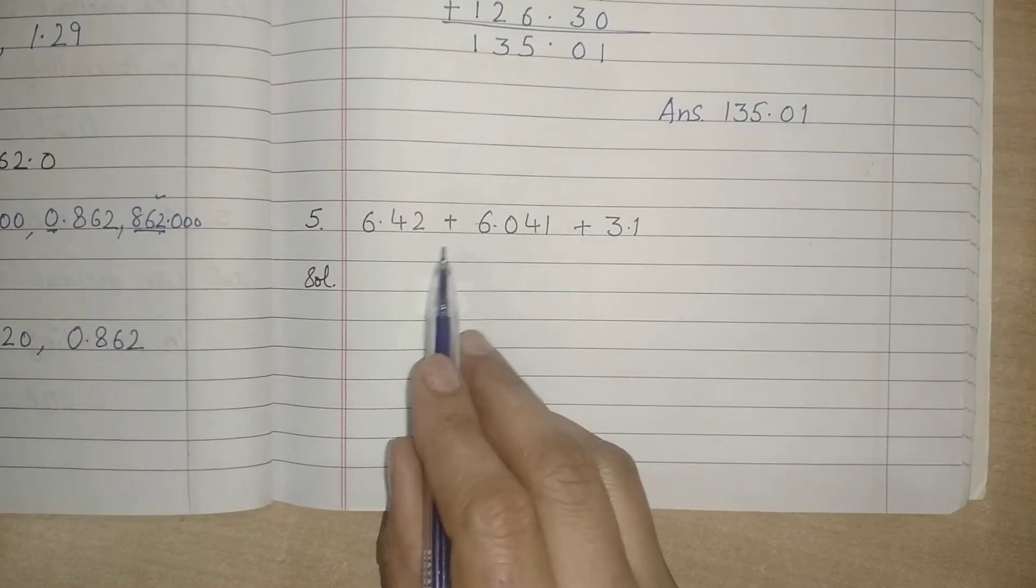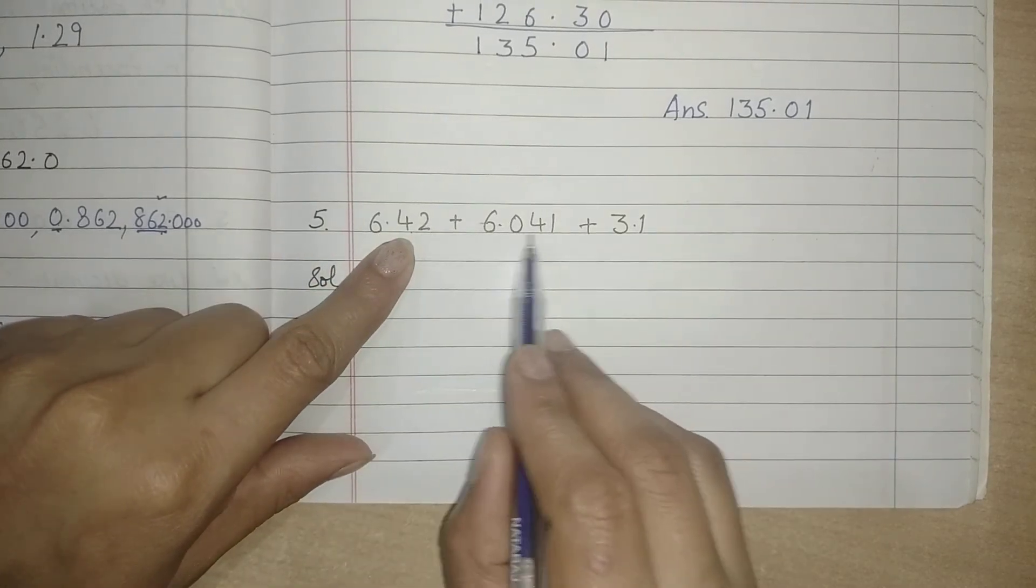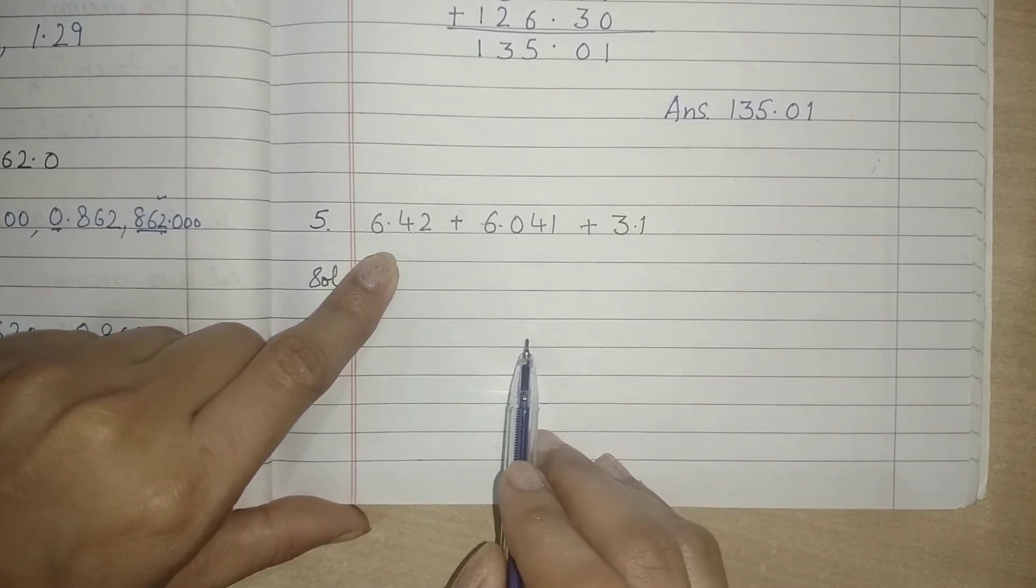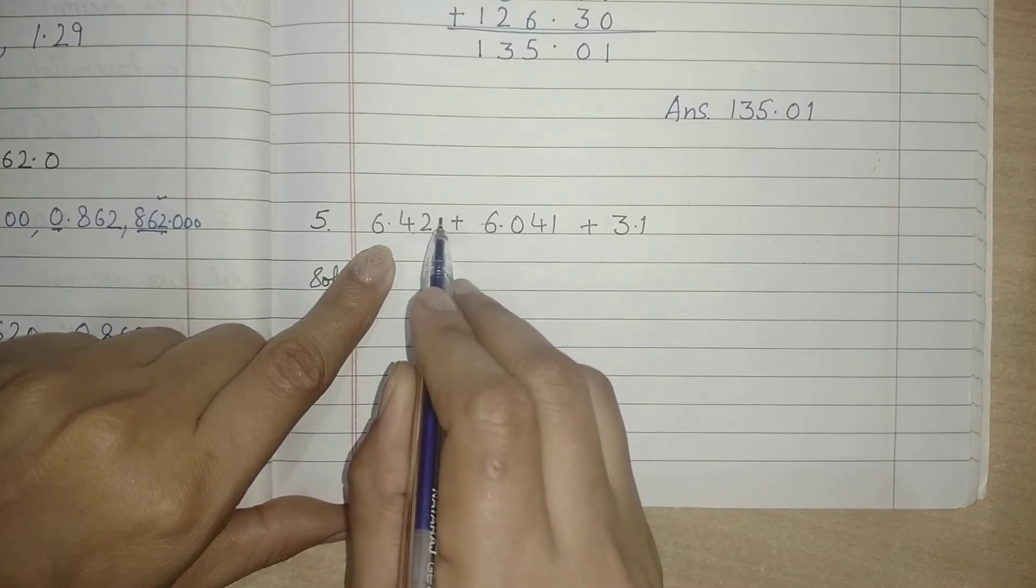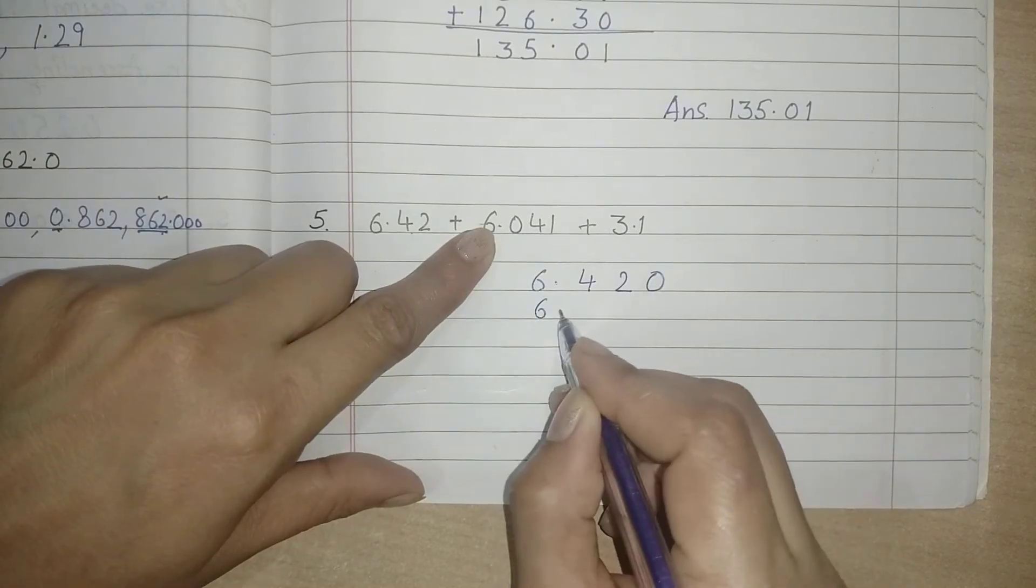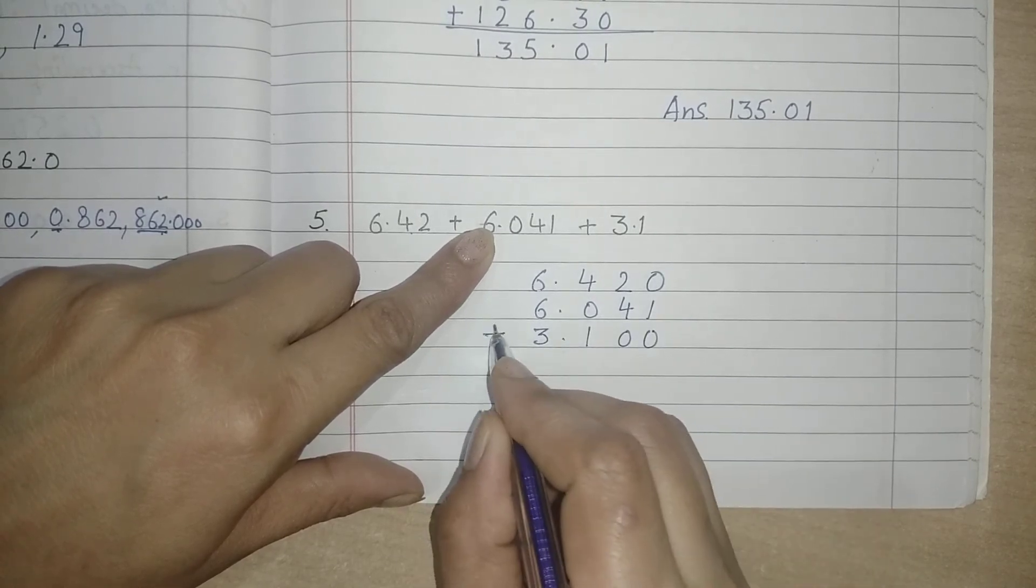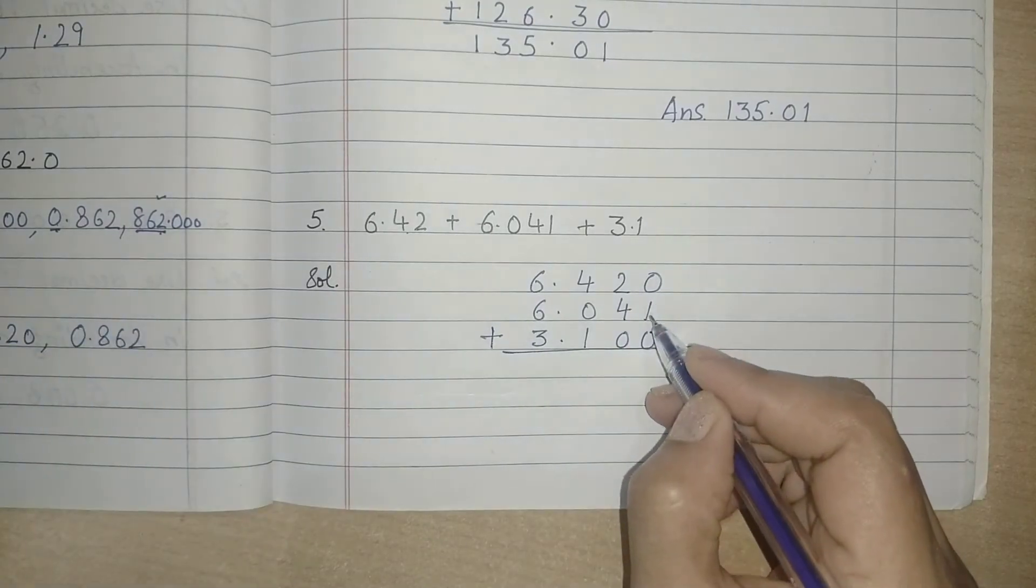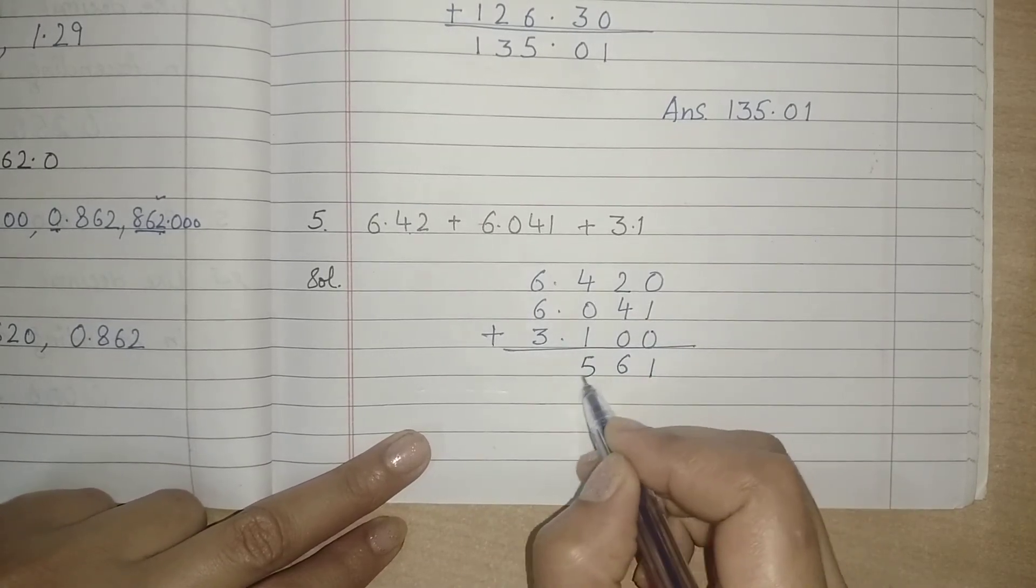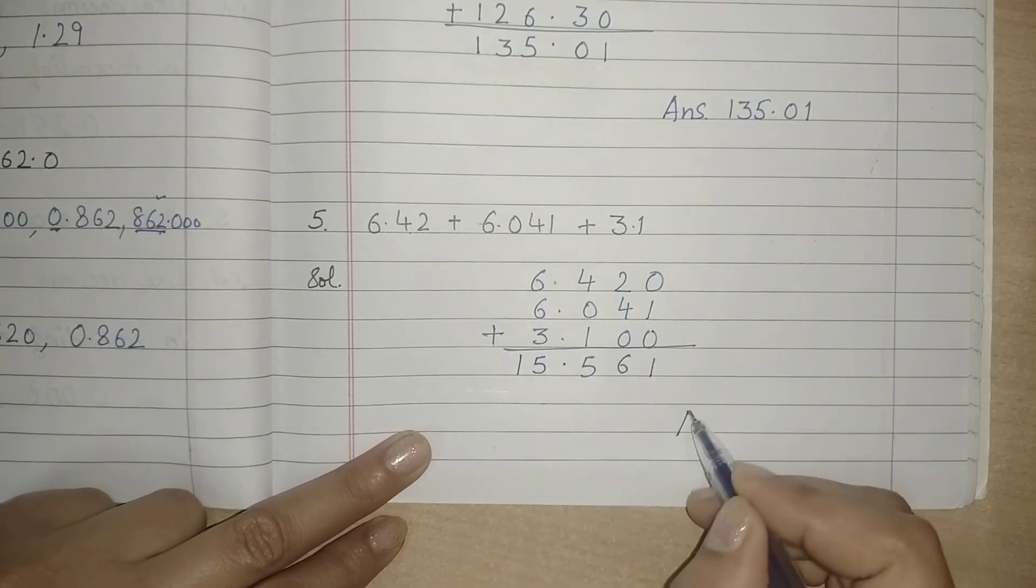6.42 plus 6.041 plus 3.1. Here the decimal places are two, three, and one. We will first convert to like decimals and also arrange in columns. We need to make it three places: 3.100. Now add it: 0 plus 1 plus 0 is 1, 2 plus 4 plus 0 is 6, 4 plus 0 plus 1 is 5, then point, 6 plus 6 is 12, 12 plus 3 is 15. So the answer is 15.561. Now let us move to the next question.